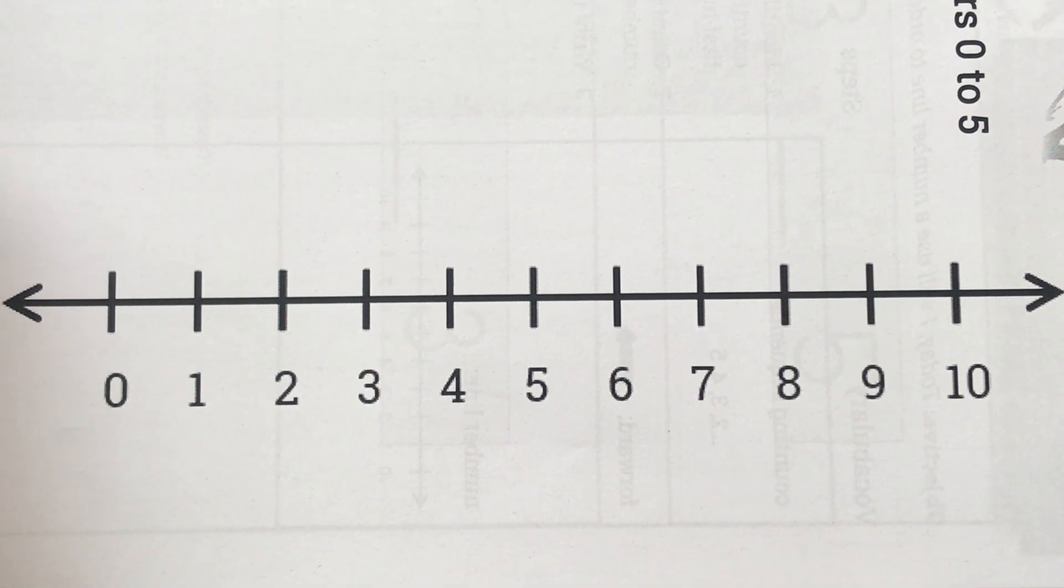What a number line does is it has all of our numbers in order. We start here, which is our least number at zero, and then our next number is one, two, three, four, and five.